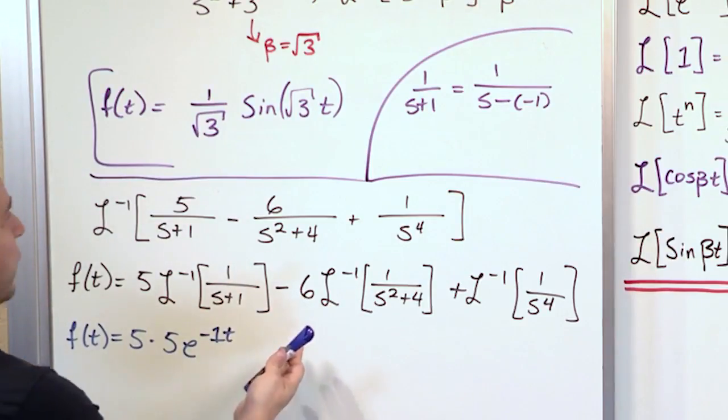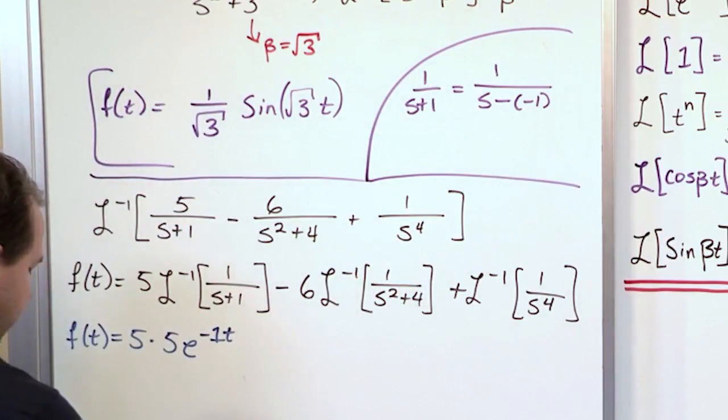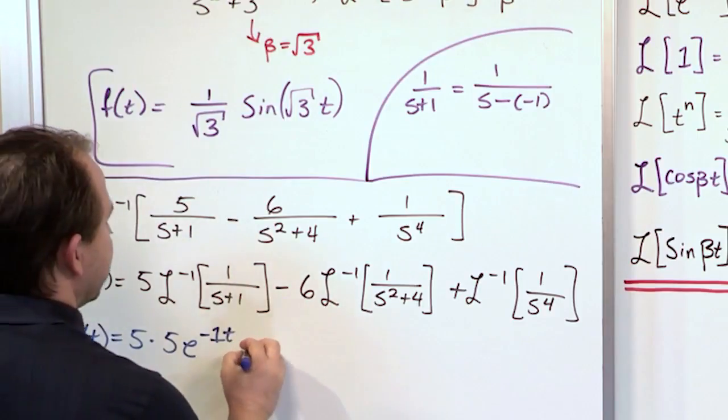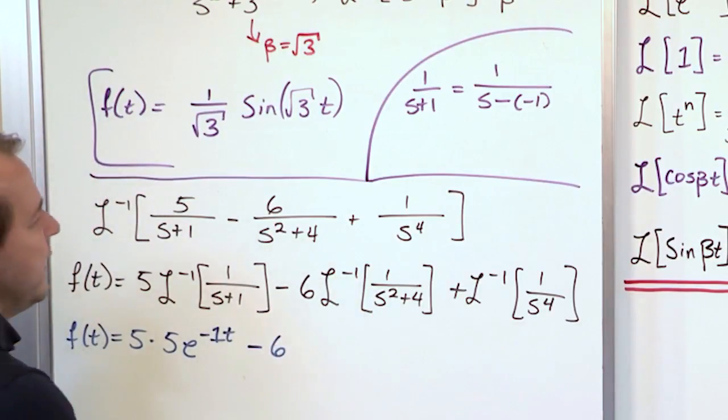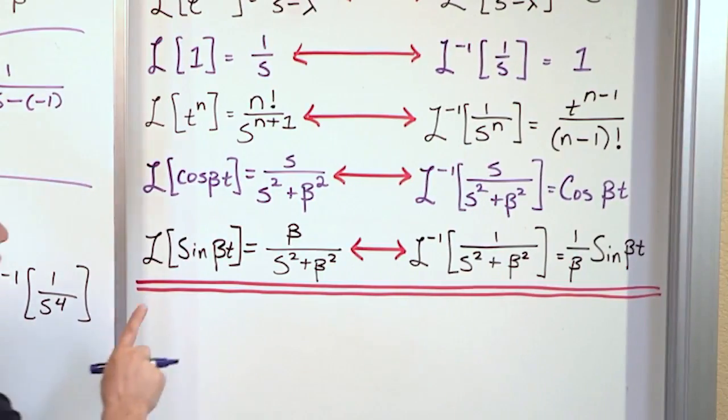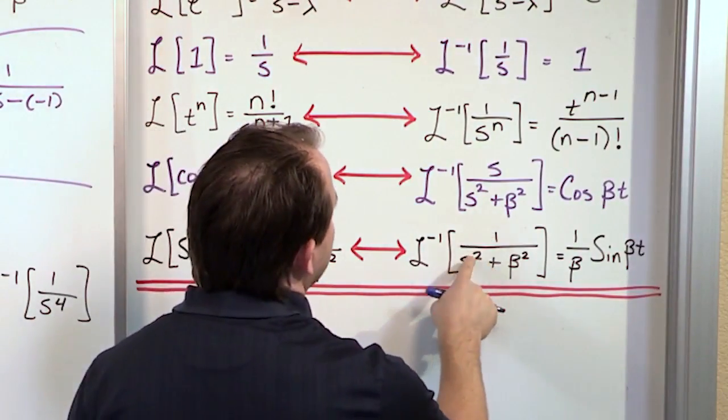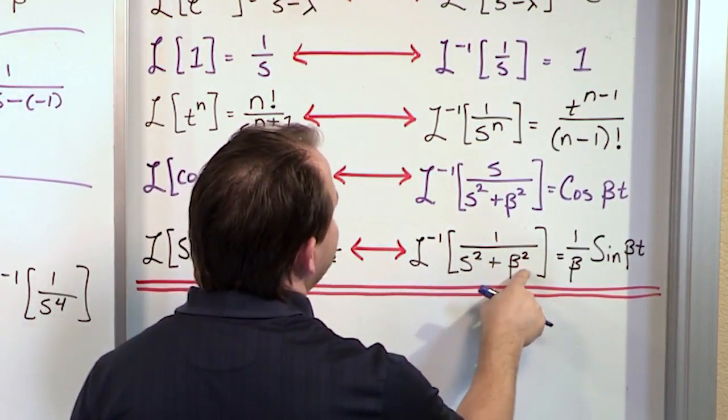All right, now let's move along here. We'll get a 6 times the inverse transform of this. Let's see if we have something that matches 1 over s squared plus 4. This one matches 1 over s squared plus 4.